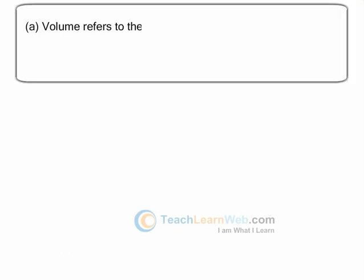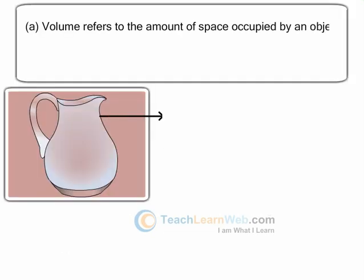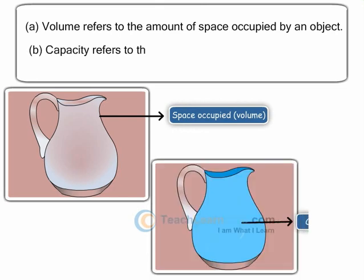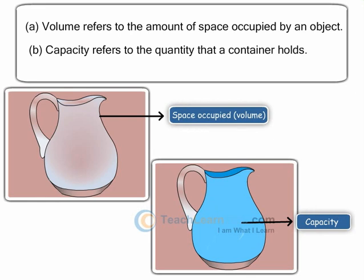A. Volume refers to the amount of space occupied by an object. B. Capacity refers to the quantity that a container holds.